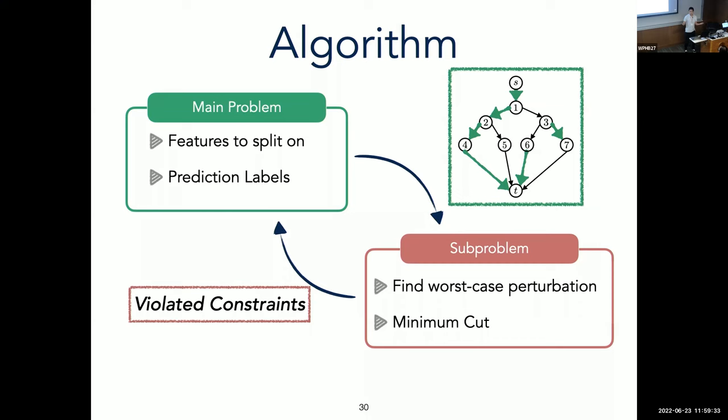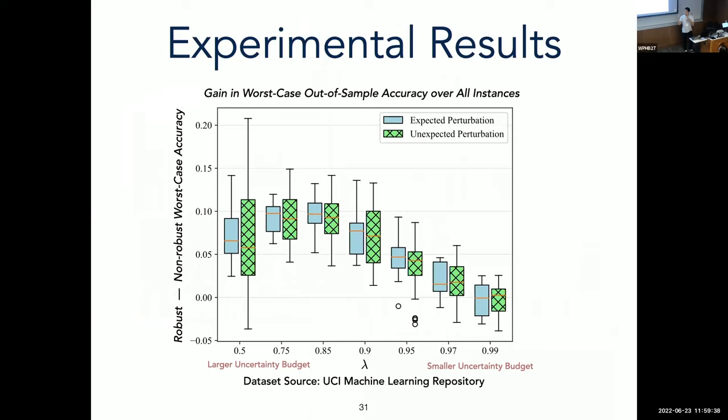So to conclude, just a few experimental results. To assess the effectiveness of robustness, we train a non-robust optimal tree and a robust optimal tree with various data sets, uncertainty sets, and tree depths. We derive a worst-case test accuracy from a held-out test set that we perturb in a lot of different ways according to some probability distribution.